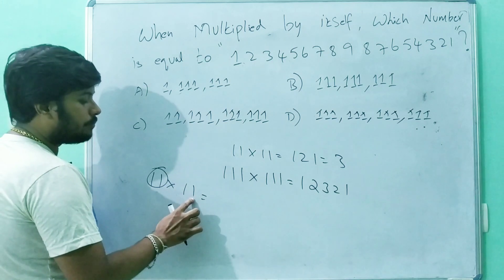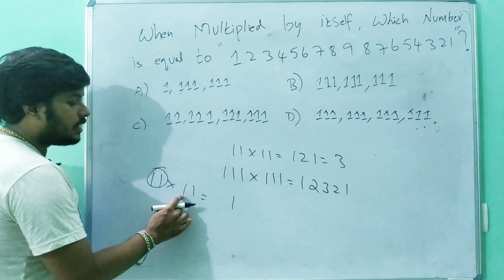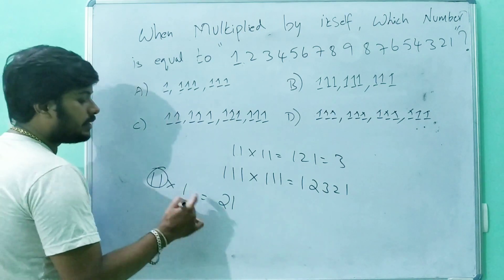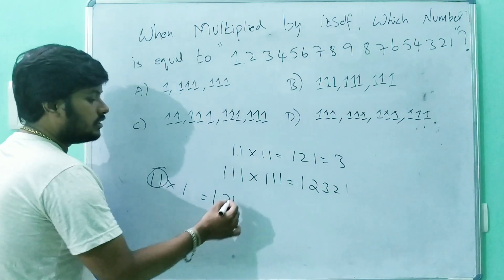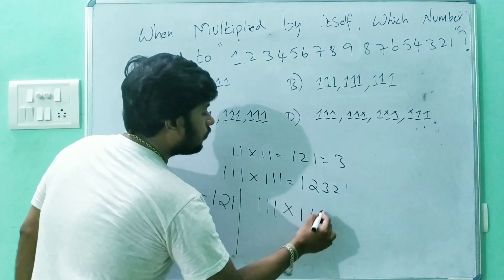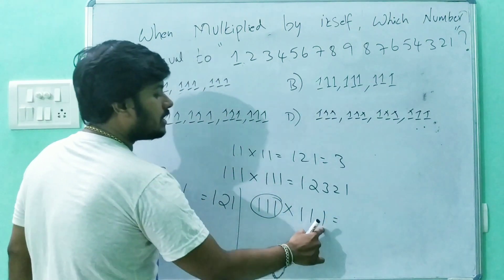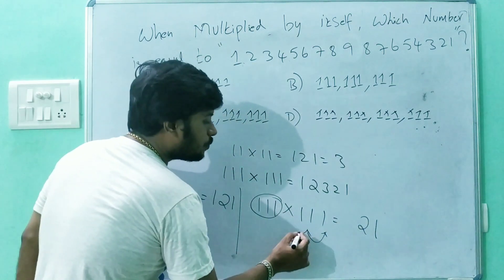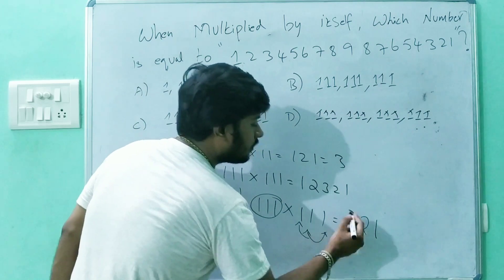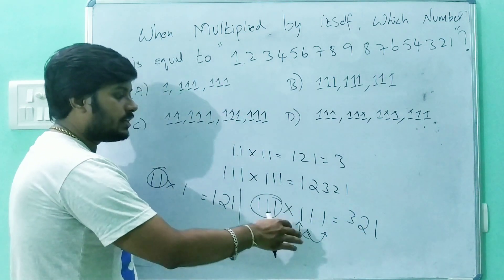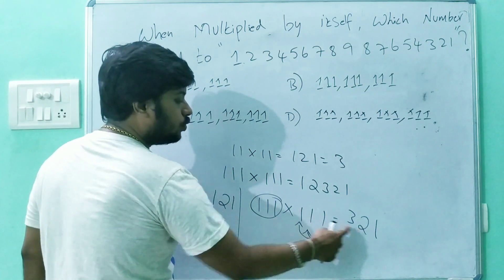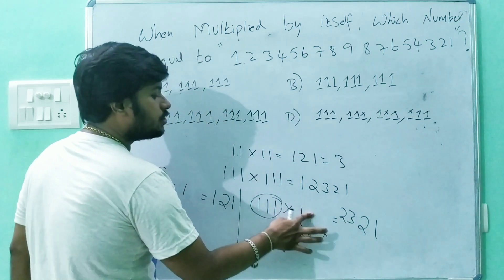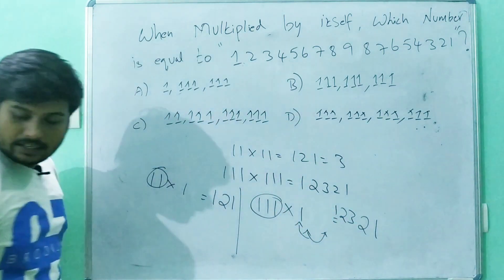Here is the method: take the last number, which is 1. Then add 2 adjacent numbers: 1 plus 1 is 2. Then add 3 numbers: 1 plus 1 plus 1 is 3. You can do this in your mind without pen and paper, even in a competition. So you get 1, 2, 3, 2, 1 — it's very simple.